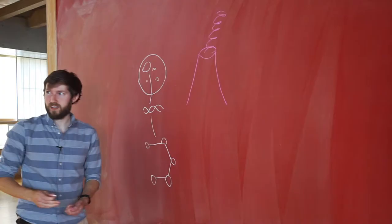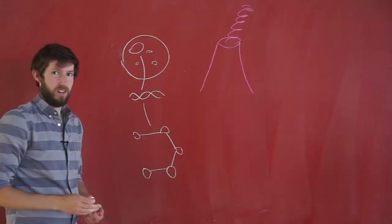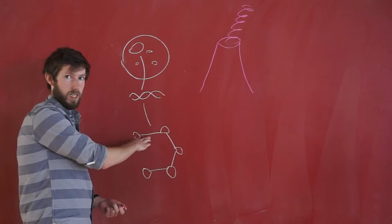A chemical reaction network looks like a bunch of dots and lines. The dots represent chemical compounds, and the lines represent reactions.